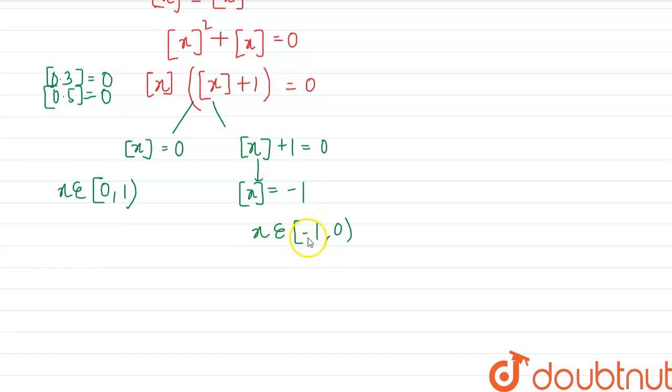See, if we place any value from like minus of 0.3, minus of 0.6, at each value the gif will give us a value of minus 1. So these are the two solution sets. So we have to take union of both of them.